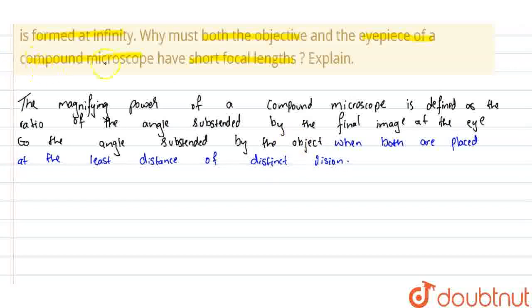Mathematically, this is given as M, where M is magnification, equals V0 (image distance) divided by U0 (object distance), times 1 plus D by Fe, where Fe is the focal length of the eyepiece.